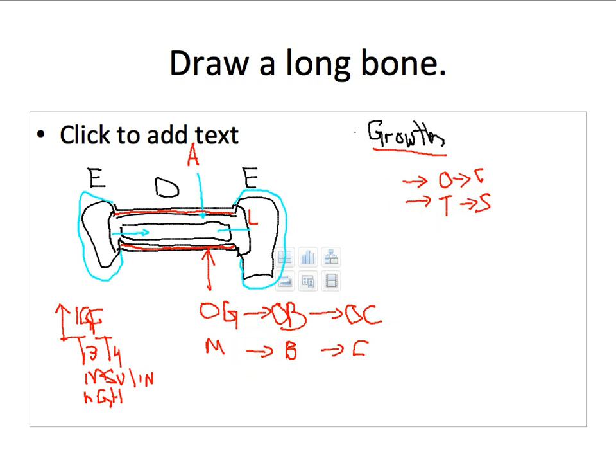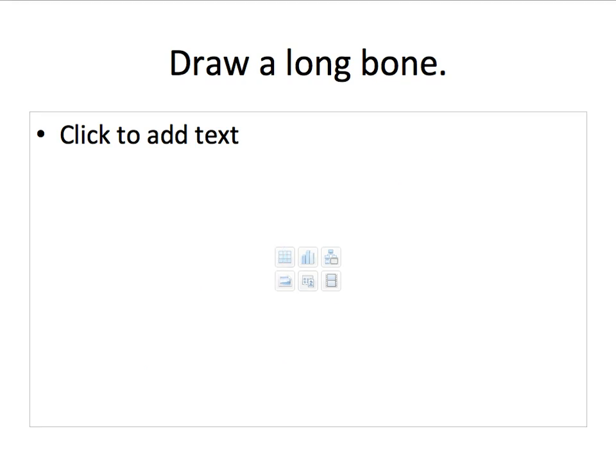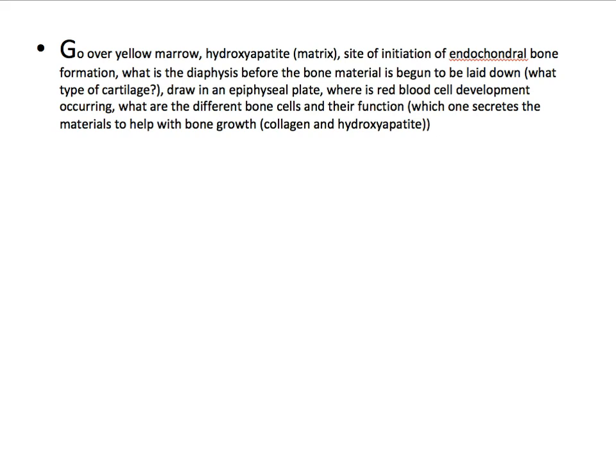So what's the next question here though? To get out of here I'm going to have to erase all of these things. Go over yellow marrow, hydroxyapatite, the site of initiation of endochondral bone formation, what is a diaphysis before the bone material has begun to be laid down, draw an epiphyseal plate, where is blood cell development occurring, and what are the different bone cells that function. So there's a lot going on in this question. What I want to do is I want to take it piece by piece. We're going to draw again.